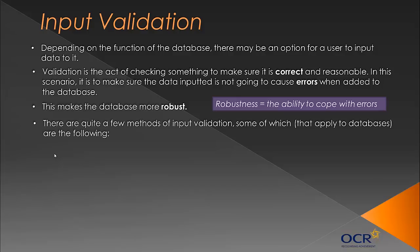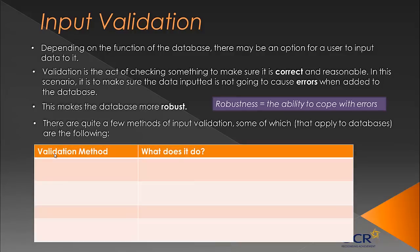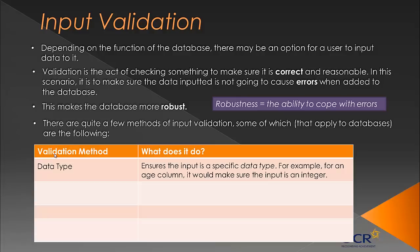There are quite a few methods of input validation. The first is data type validation, which ensures the input is a specific data type. A data type is the classification of data - characters, integers, Boolean values. For example, if you have an age column in a table, you want to make sure every input is an integer - a whole number. You don't want a letter inputted into an age column because that may cause an error if you're doing a calculation, and that's not robust.